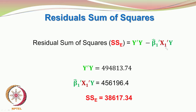x₁ refers to the first regressor variable. The total sum of squares y'y is 494813.74, which is the transpose of y multiplied by y. So β̂₁' x₁' y based on the matrix gives 456196.4. The difference between y'y and β̂₁' x₁' y is 38617.34.